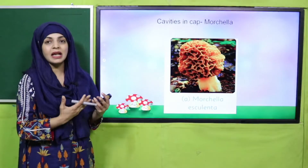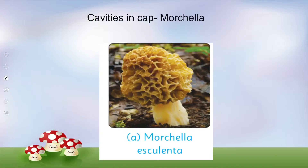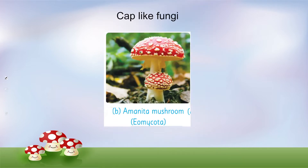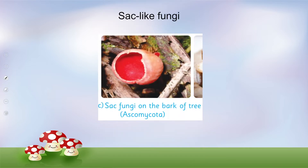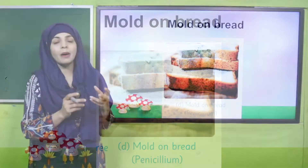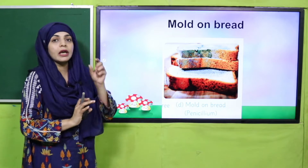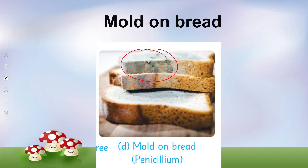Now let's look at pictorial examples. This is a kind of fungi — you can see it has a mushroom shape, and this is a cap-shaped fungus. Then comes Amanita mushroom — this is also a fungi. Sac-like fungi, this is Morchella (Ascomycota), also a type of fungi. And there are bulbous types. Bread molds — if your bread is left out for several days without refrigeration, green molds grow on it. These are called fungi, specifically Penicillium.